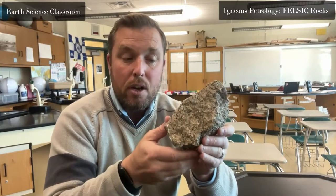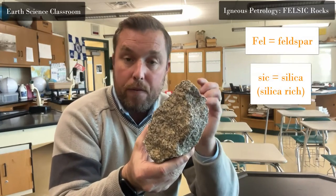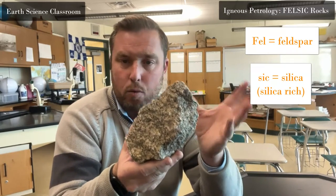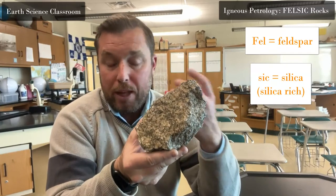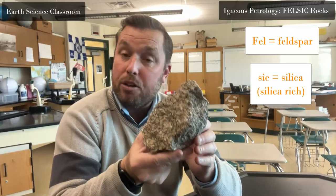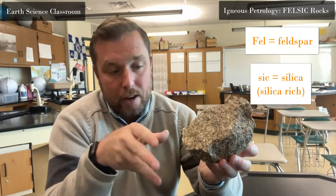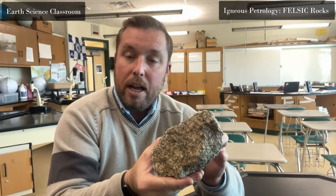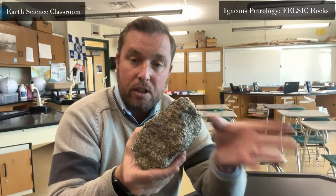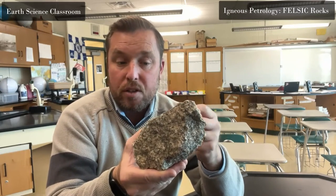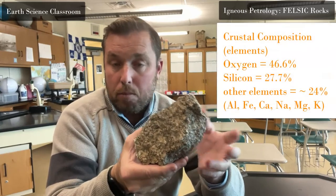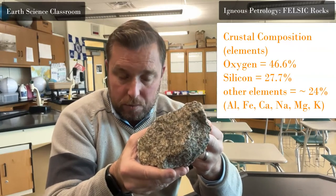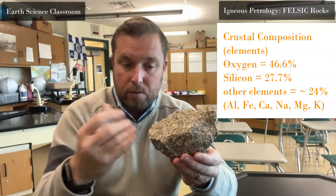The word 'felsic' comes from a combination of feldspar and silica. 'Fel' comes from feldspar, which is the German word for ground mineral — it's a group of minerals that vary based on calcium and sodium proportions according to Bowen's reaction series. 'Sic' comes from silica, which is silicon dioxide, SiO2. Silica is the most abundant mineral in the crust, known commonly as quartz, and silicon and oxygen are the most abundant elements in the crust.